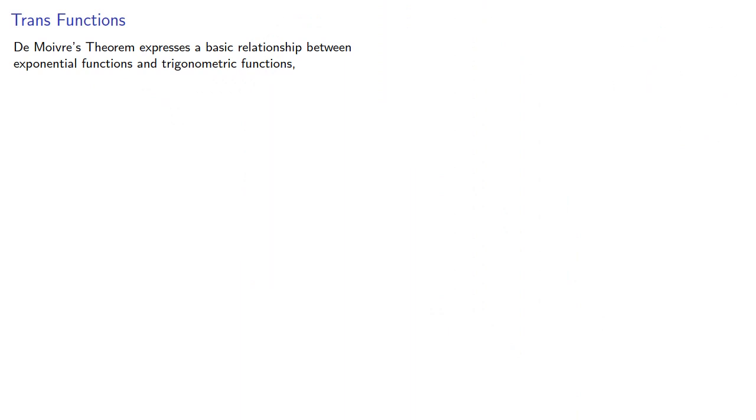De Moivre's Theorem expresses a basic relationship between exponential functions and trigonometric functions: e to the i theta equals cosine theta plus i sine theta. It allows us to evaluate complex powers and solve previously unsolvable equations like cosine theta equals two.